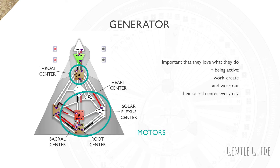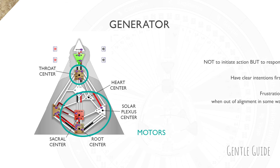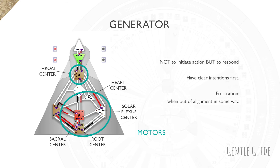Generators need to be active — they need to work, create, and wear out their sacral center every day. They aren't supposed to initiate action the way a Manifestor does, but are here to respond to the opportunities that the environment provides. It's important that they have an intention first, a clear vision of what they desire. Then, when the world responds and gives them options, they need to check in with their sacral center for an internal yes or an 'aha' before they commit to any further steps.